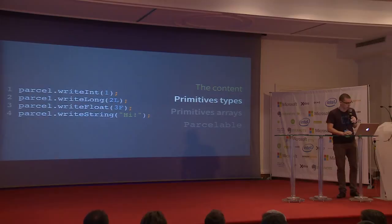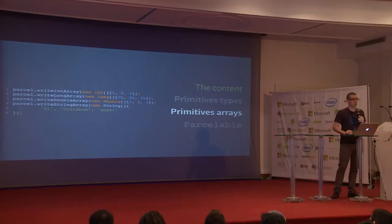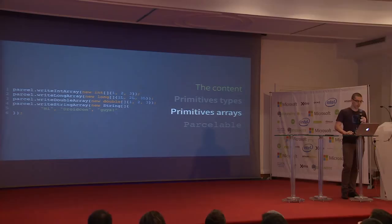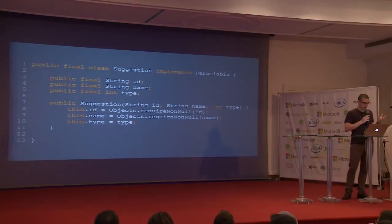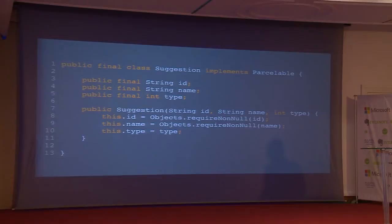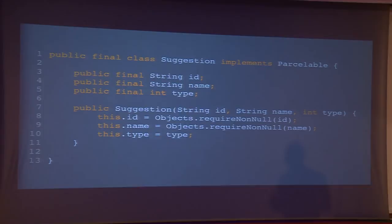You can also put primitive arrays in a Parcel — an int array, an array of doubles, or strings. This is very low level. Fortunately, there is a protocol called Parcelable that can be used to put more evolved data inside your Parcel objects. It is similar to Java's Serializable, but requires more code written by the developer — though it is also more efficient, around 10 to 20 times.